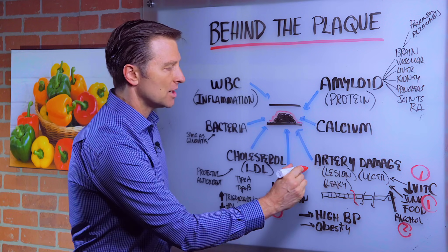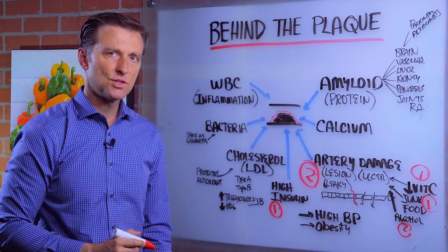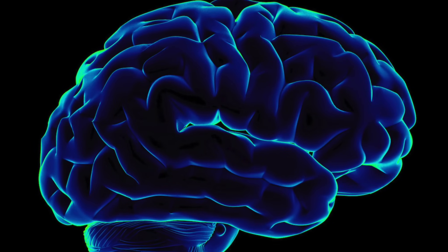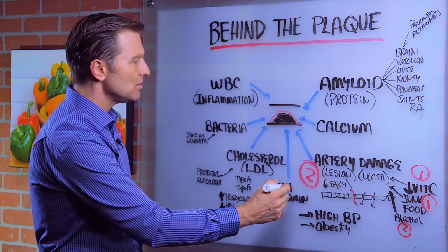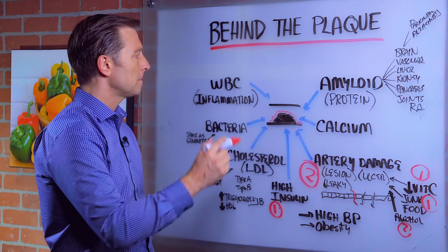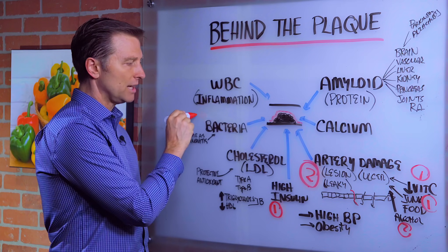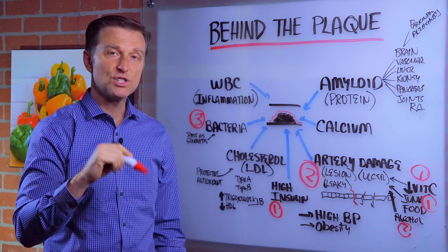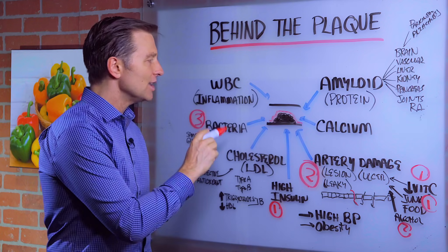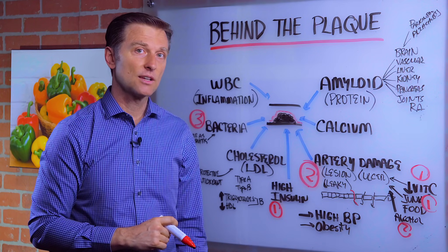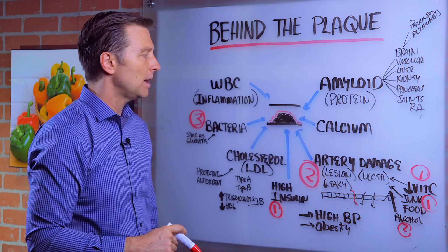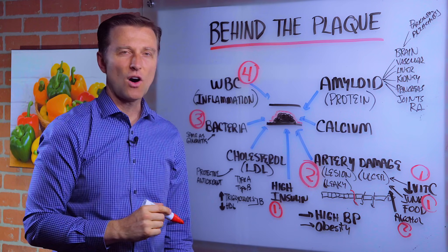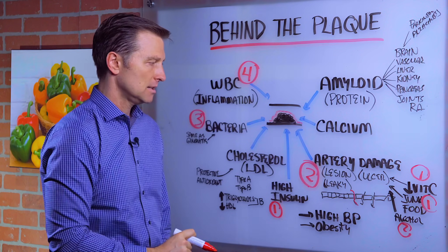The second thing you get is artery damage — and it could be damage in the joints, the liver, and the brain, depending on your weakest link in your body. After you get this artery damage, you're more susceptible to bacteria. They've even found the same microbes from gingivitis in your gums present in your arteries. Then you get an immune reaction — that's number four. So inflammation is not really the cause of these things, it's the effect.